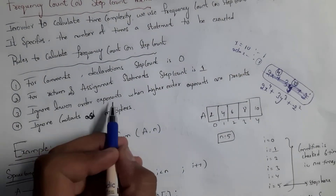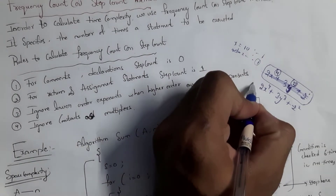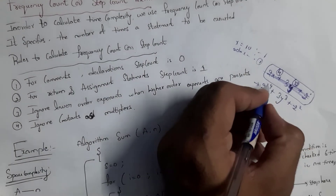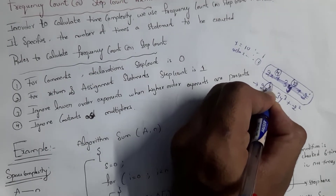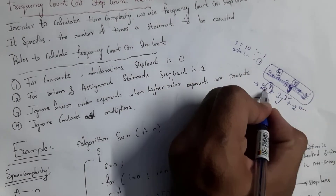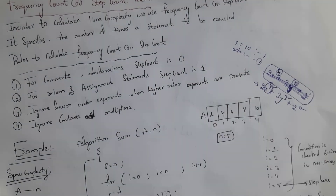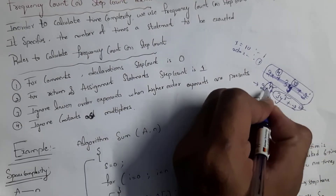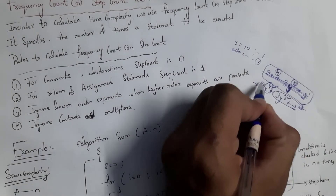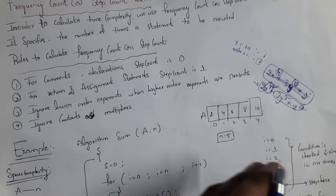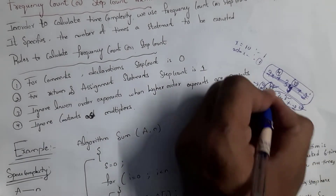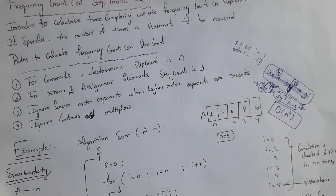The third rule is to ignore lower order exponents when higher order exponents are present. For example, consider a time complexity expression: the higher order exponent is x to the power of four. We have z squared (exponent 2), y cubed (exponent 3), and 2x to the power of four (exponent 4). We ignore all lower order exponents and constants. So the degree is O(n to the power of four) because the highest exponent is four.